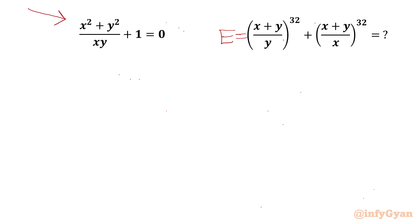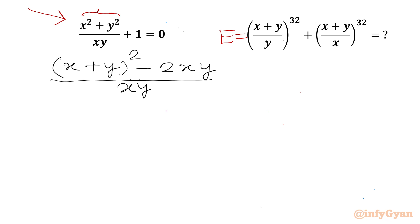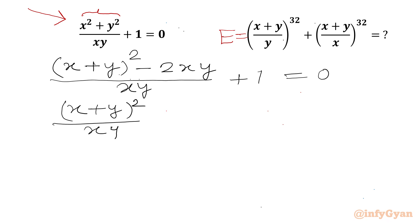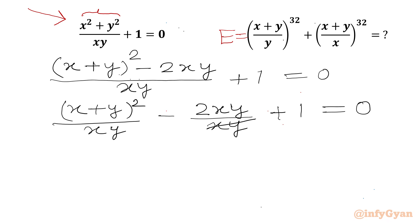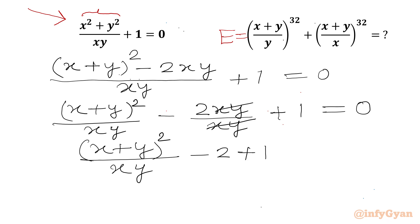Now I will use the given equation and our algebraic identities. We will write x² + y² as (x + y)² − 2xy. The denominator is xy, plus 1 equals 0. So we can write (x + y)² over xy minus 2xy over xy plus 1 equals 0. Now xy and xy cancel.